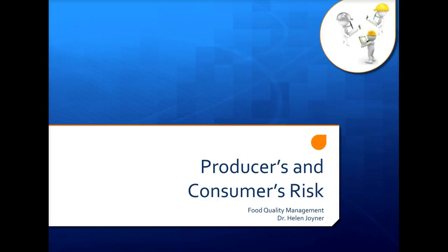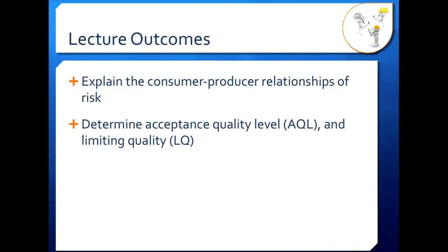Producers and consumers have different risks when we talk about sampling. This lecture will explain the difference between the consumer-producer risks and the relationship between the two, and also look at determining acceptance quality level (AQL) and limiting quality (LQ).